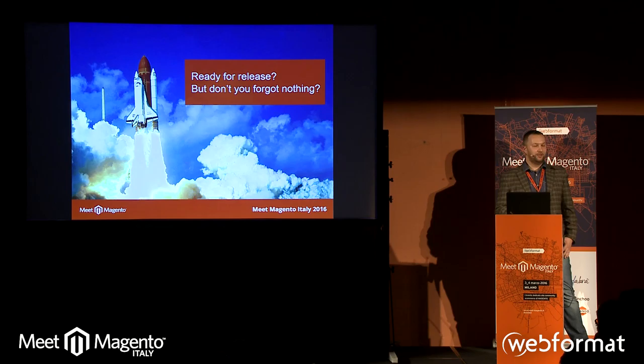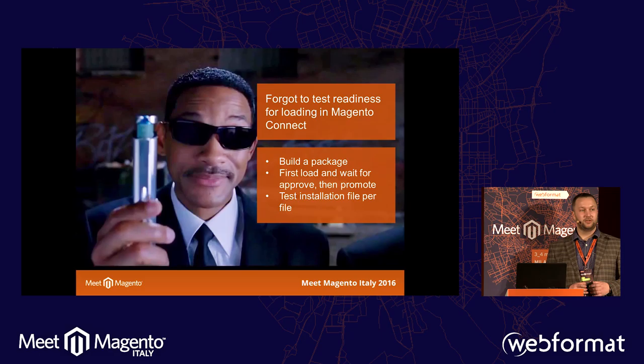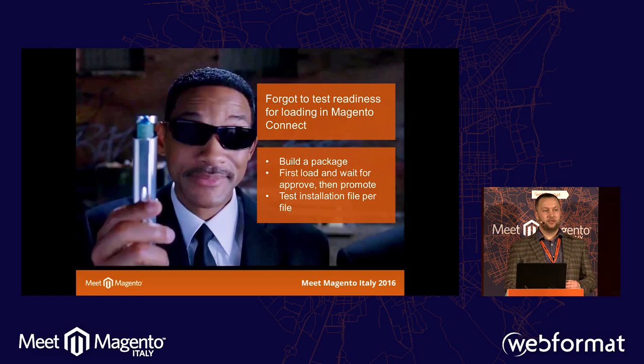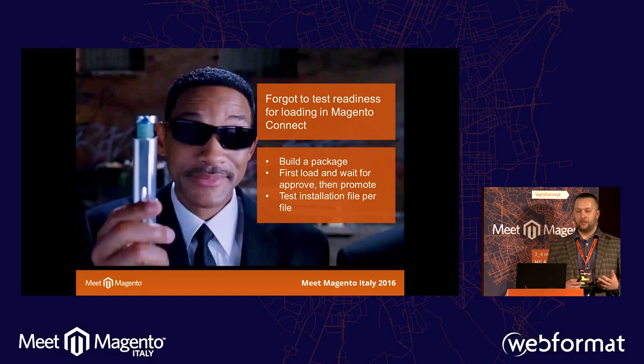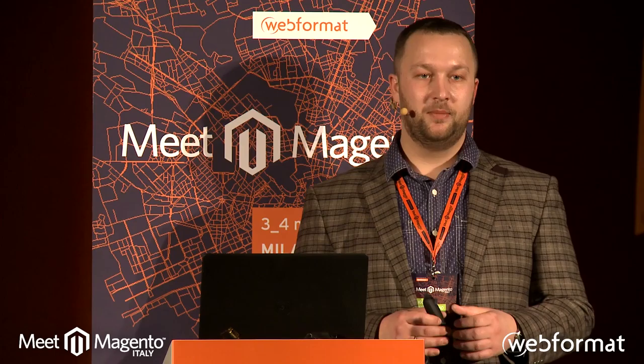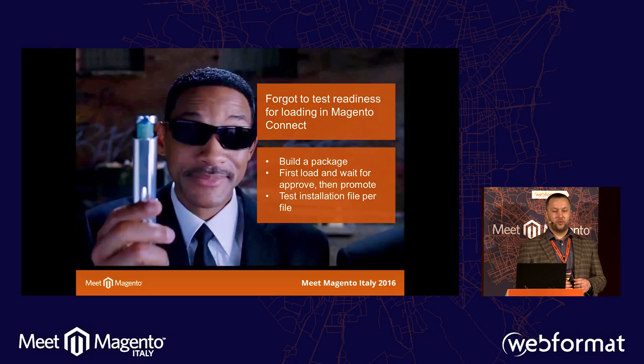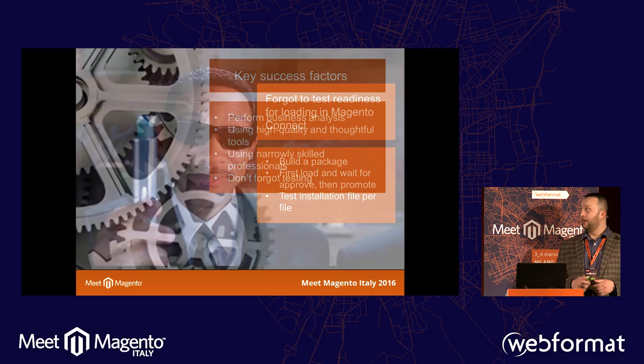When you finish testing, it seems you're ready for release — but did you really forget nothing? Many teams forget to test the readiness of the extension package for Magento Connect. Sometimes I get into a situation where I try to install a new extension from Magento Connect and it doesn't install because the developer forgot to include some files in the package. You must create a package and then send it to the QA team to ensure all files are present. Then upload your package to Magento Connect, wait for approval, and install the extension. If it works fine, start to promote it.